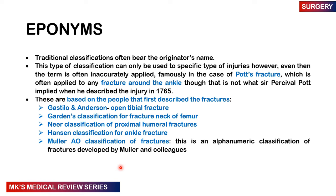Based on eponyms, this classification denotes specific injuries to specific names — the person who first described the fracture. One famously known is the Pott's fracture, which often implies any fracture around the ankle, though Sir Pott actually described something different in 1765. Other eponym-based classifications include the Gustilo-Anderson classification of open tibial fractures, Garden's classification for fractures of the neck of the femur, Neer classification of proximal humeral fractures, Hansen and Weber classifications of ankle fractures.